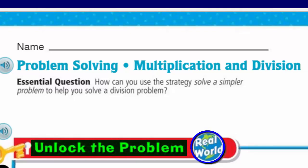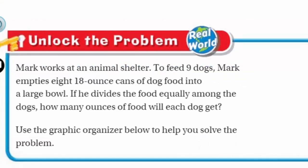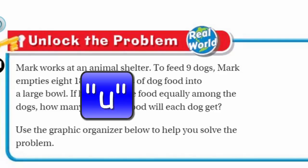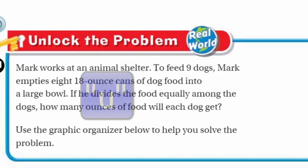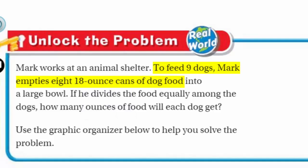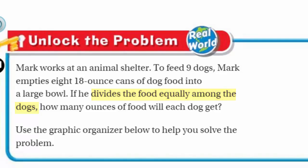It's real world! It says: Mark works at an animal shelter. To feed nine dogs, Mark empties eight 18-ounce cans of dog food into a large bowl. If he divides the food equally among the dogs, how many ounces of food will each dog get? So if each can is 18 ounces and I have eight of them, I need to find the total ounces first before I can divide equally among nine dogs. What we're trying to find is how many ounces of food each dog will get.